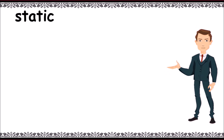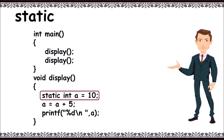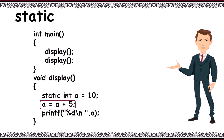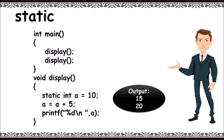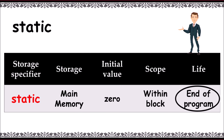Static: the value of a static variable remains until the end of the program and is declared using the keyword static. In the example, main calls the display function. The first time, static int a is initialized to 10, then 5 is added, and it prints 15. On the next function call, display starts again. This time it skips the initialization as it is static, then performs a equals a plus 5, that is 15 plus 5 equals 20, and prints 20. The keyword is static, storage is on main memory, initial value is 0, scope is within the block, and lifetime is till the end of the program.